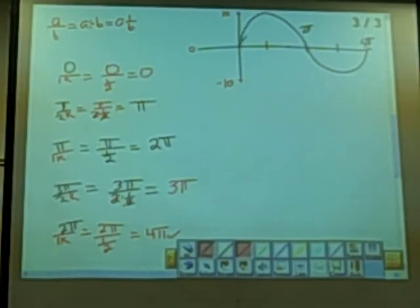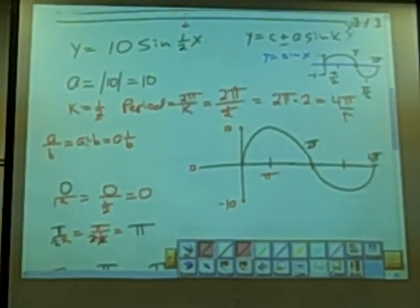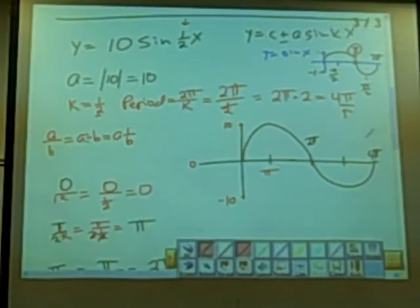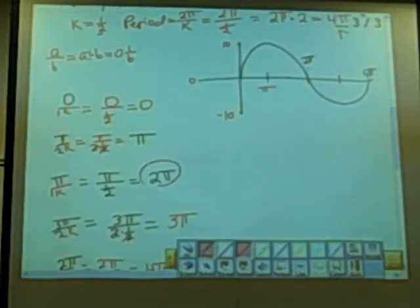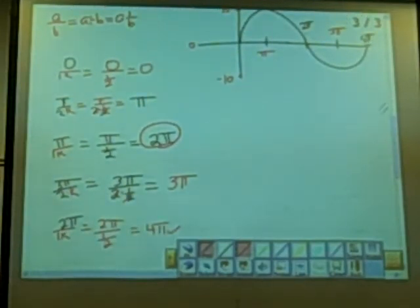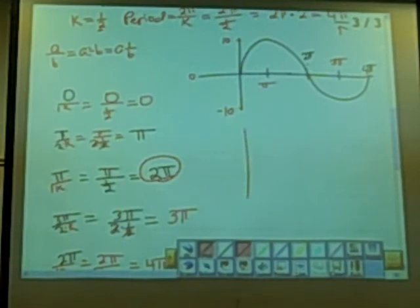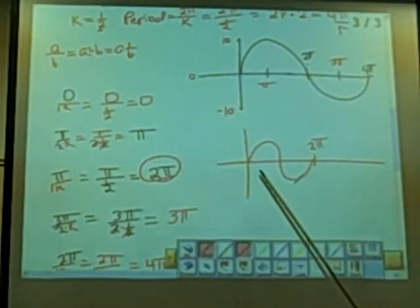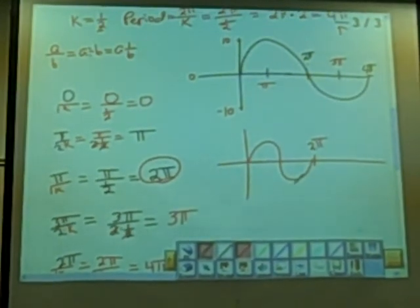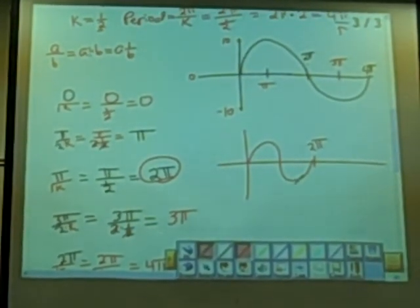So here, we're still at 0, and then instead of pi over 2, now we're at pi. Instead of at pi for our original graph, now we're at 2 pi. And now, instead of at 3 pi over 2 here, we're at 3 pi. And then instead of 2 pi, we're at 4 pi. You see how, originally, if this is 2 pi here in our original graph, you see how that horizontally stretched the graph, having k at 1 half.